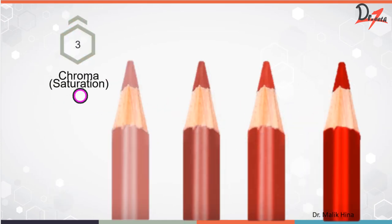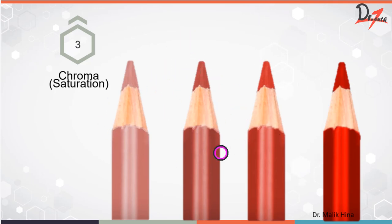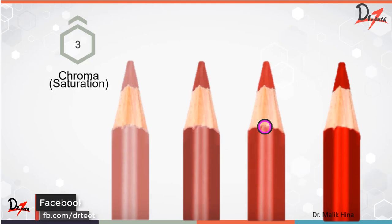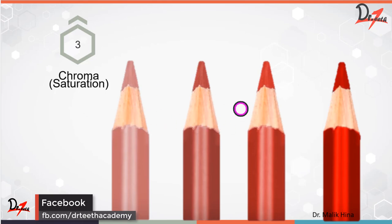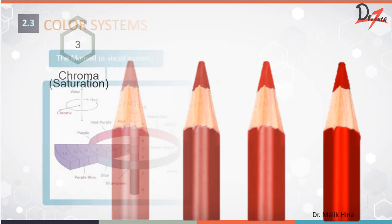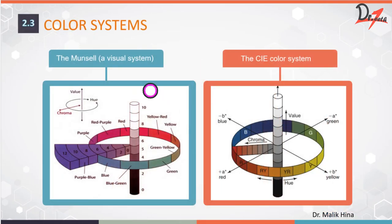Chroma is the saturation of a particular hue. You can imagine this as different shades of lipstick — subtle variations in the same color. Girls are very good at this; we understand the subtle differences in color. That slight bit of difference between similar shades is the saturation, or chroma. Now there are two popular color measuring systems: the Munsell system, which is a visual system, and the CIE color system.